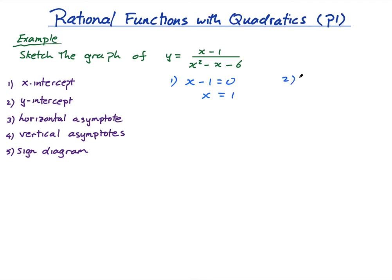Step two: the y-intercept. The y-intercept happens when x equals zero. Substituting zero in, I'm left with negative one over negative six, which is one over six. So the y-intercept is y equals one over six.